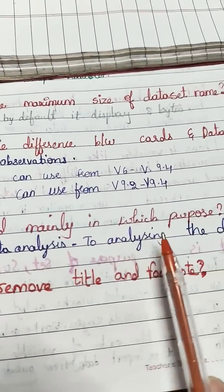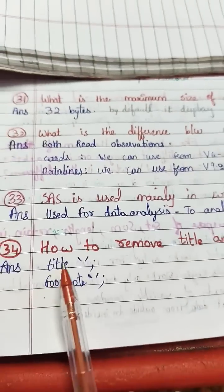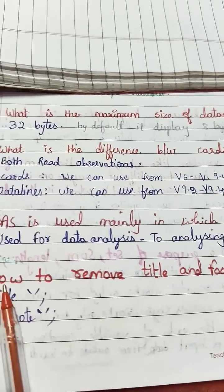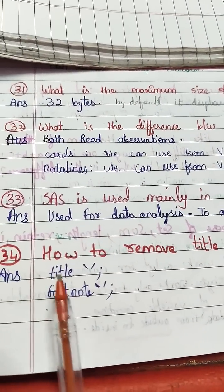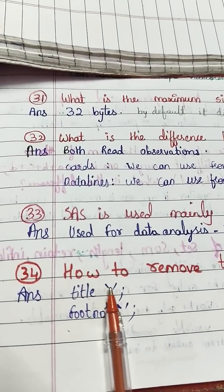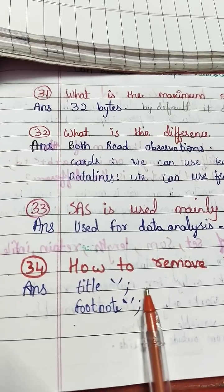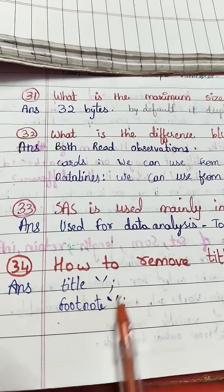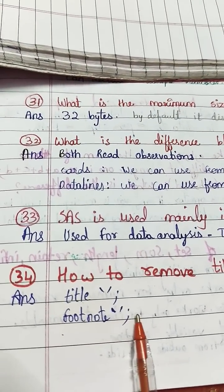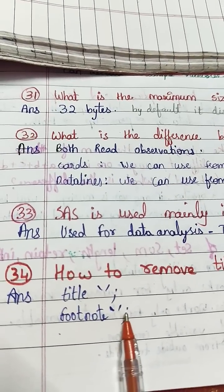How to remove title and footnote? This is an important question. To remove them, you write: title space with single quotes semicolon, and footnote space with single quotes semicolon.